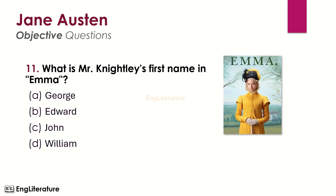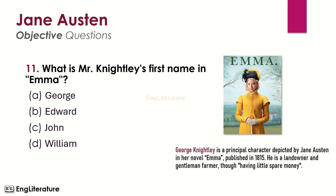What is Mr. Knightley's first name in Emma? George Knightley is a principal character depicted by Jane Austen in her novel Emma, published in 1815. He is a landowner and a gentleman farmer, though having little spare money. The right choice is number A — in the novel Emma, Mr. Knightley's first name is George.